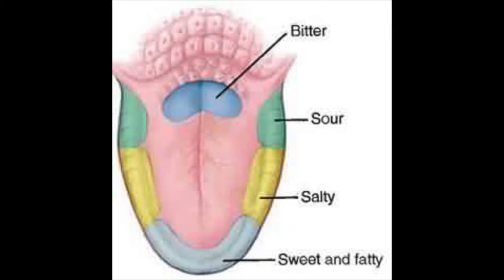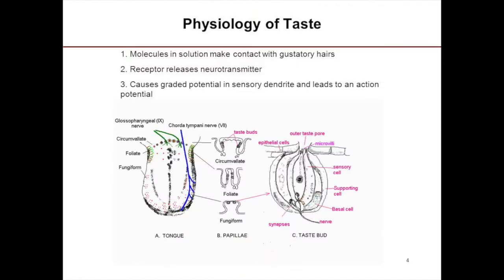While taste receptors are thought to be divided up amongst the tongue anatomically, all areas of the tongue can actually be used to detect all of the taste modalities. The physiology of taste relies on a food chemical being dissolved into saliva, diffused into a taste pore, and then contacted by the gustatory hairs. The food chemical will then bind to its appropriate receptor within the gustatory cell, which induces a graded depolarizing potential, thereby releasing neurotransmitter. The binding of these neurotransmitters to their associated sensory dendrites trigger generator potentials that elicit action potentials.